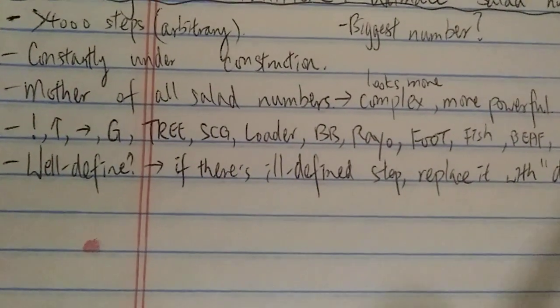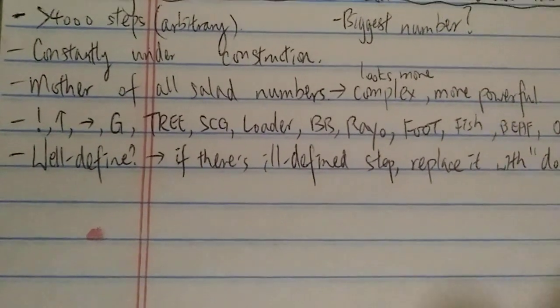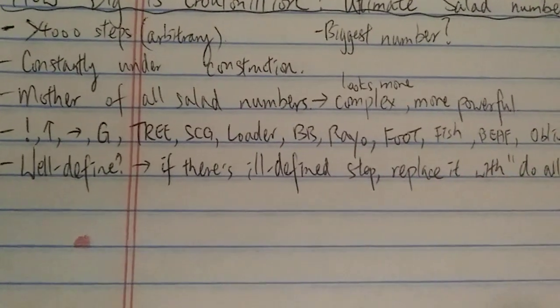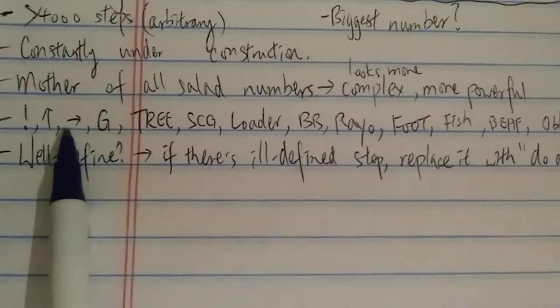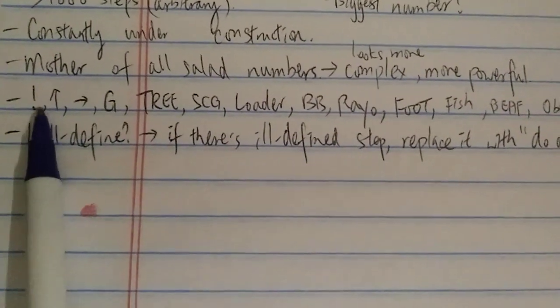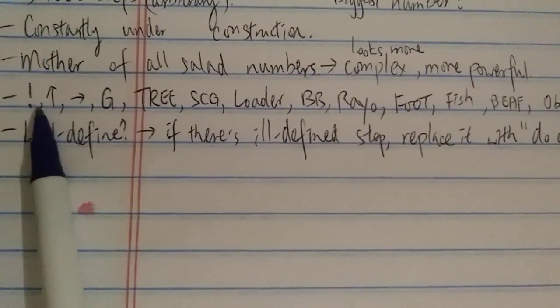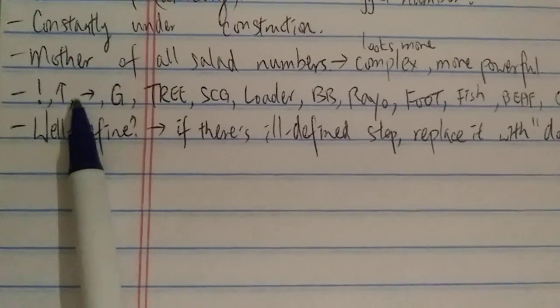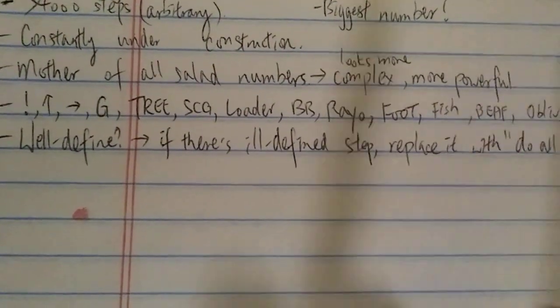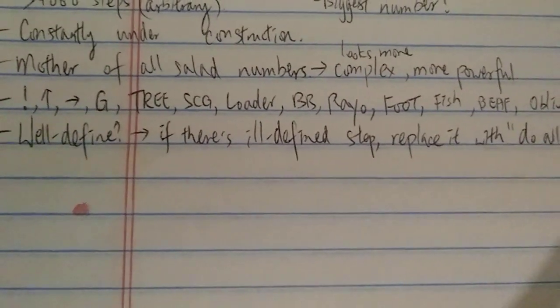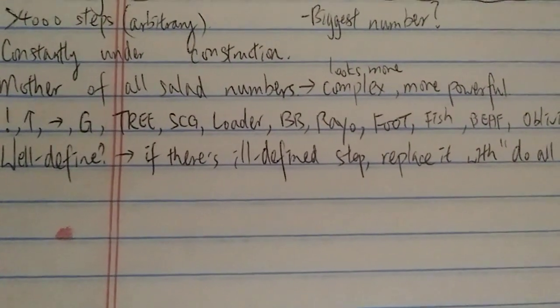It involves basically almost every single Googleology that has ever been defined in each of these steps. Check out the steps yourself, they're pretty crazy. Some of the examples include factorial, up arrow, chain arrow, BAF, beef, or any other array notation, strong array notation, birth array notation, something like that.